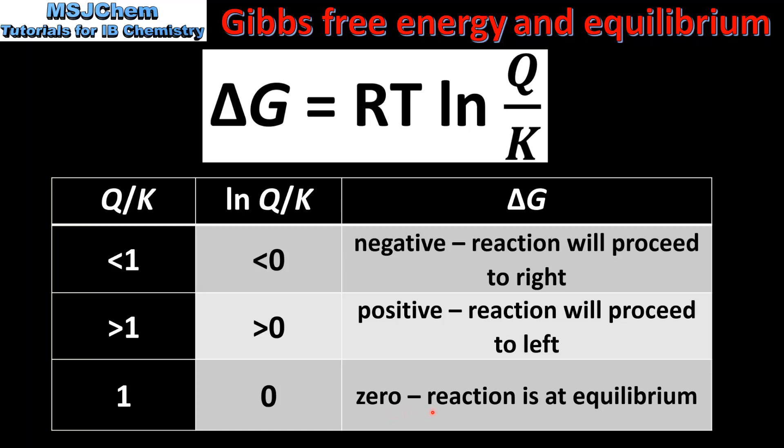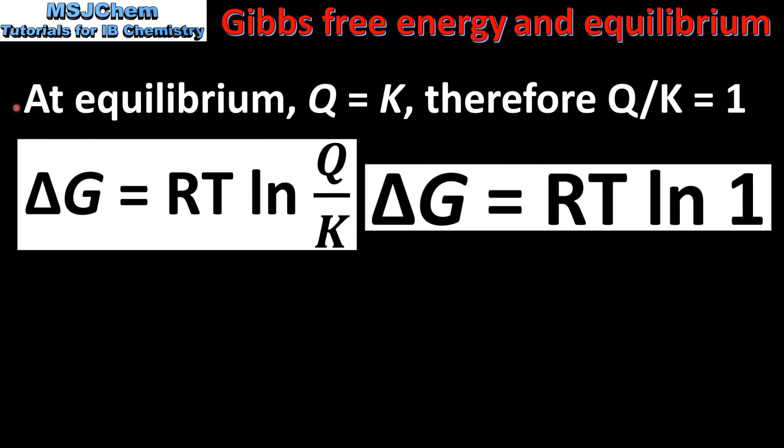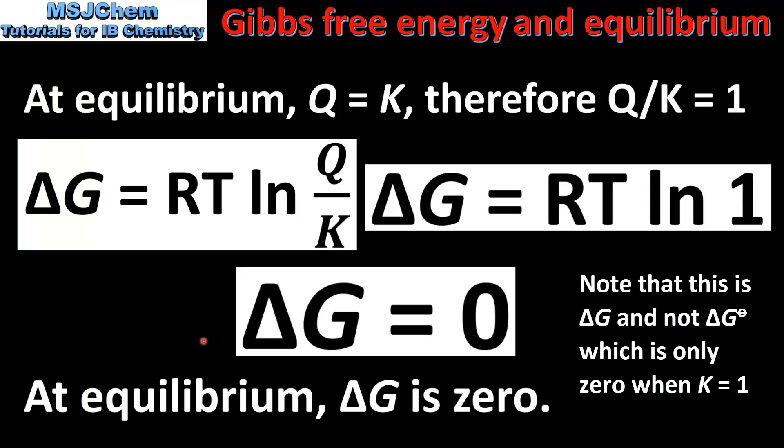At equilibrium, the reaction quotient Q is equal to the equilibrium constant K. Therefore Q/K equals 1. Substituting this into the equation, the change in Gibbs free energy equals R times T times the natural log of 1. Since the natural log of 1 is 0, at equilibrium the Gibbs free energy change is equal to 0.